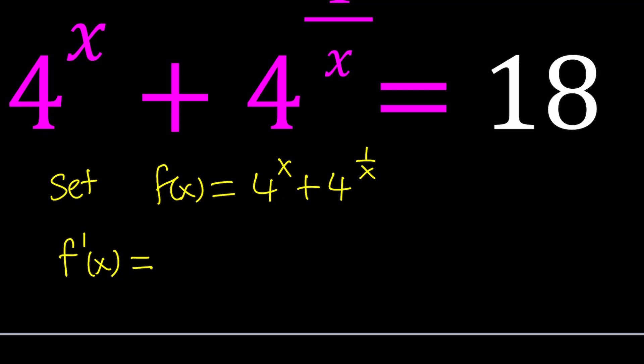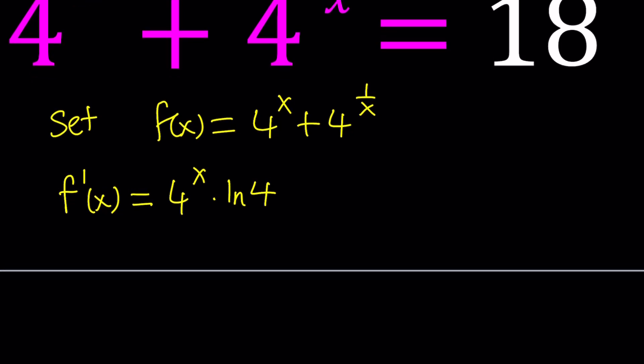To differentiate a to the power something, you're just going to write the same thing and then multiply by the ln of the base. If the base is e, that automatically turns into a 1 which you don't have to write. But in this case it's 4, so we have to multiply by ln 4 as a correcting factor. Then you multiply by the derivative of the inside by chain rule, which is the derivative of x — but that's just 1.